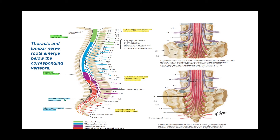Still on this image — the cauda equina is a bundle of nerves that includes the filum terminale. The filum terminale is a fibrous structure extending right from the conus medullaris in the midline. The part lying within the dural sac is called the filum terminale internum, and when it goes beyond the dural sac, it is called the filum terminale externum.